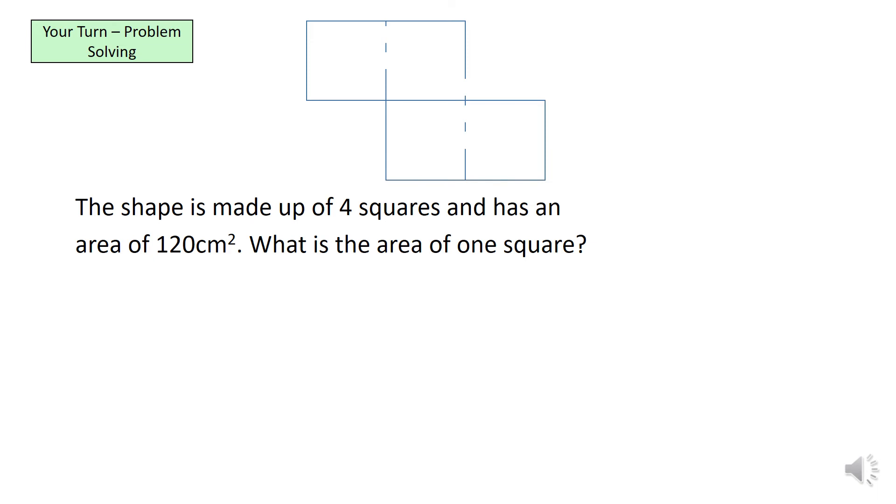Okay, what we should have first of all done is called square S for square. And we know that 4S, which because there are 4 squares, equals 120. And now as I said, it's a simple one-step equation. We divide both sides by 4 and we would have had S equals 1 square equals 30 cm².